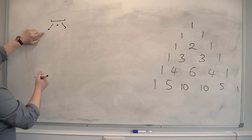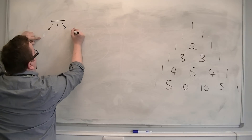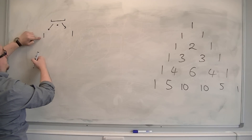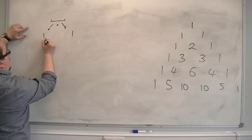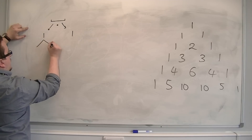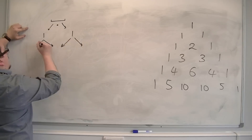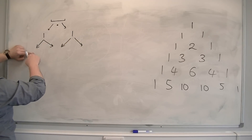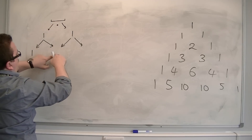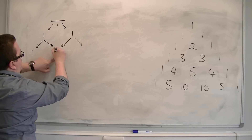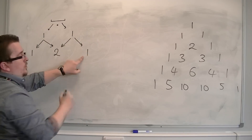So there's one possibility of getting to this position, and one possibility of getting to this position. When it goes into the next drop, there's one way that it could get to here, two ways that it could get there, and one way it could get there.